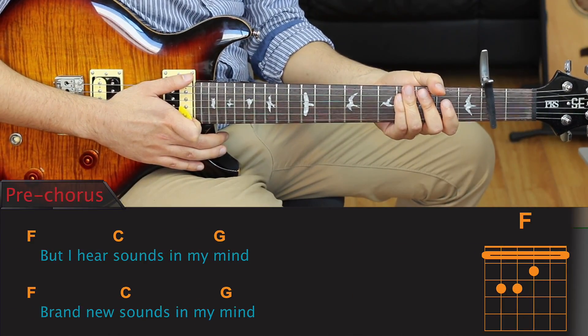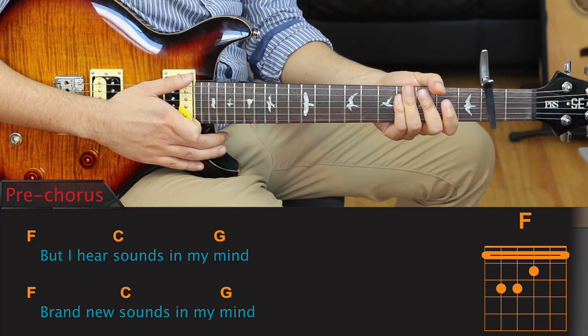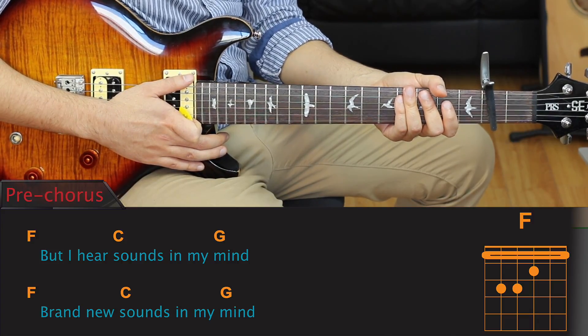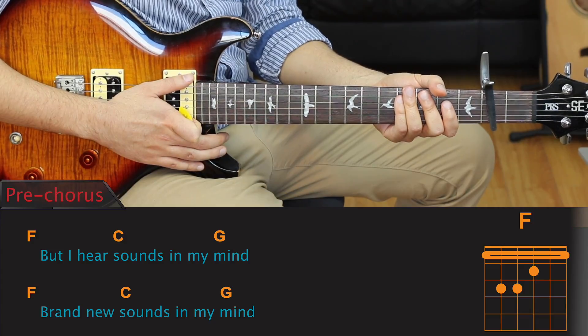The good news is that the pre-chorus, the chorus, and the outro use all the same chords and strumming patterns, which means that once we've learnt this section, we'll basically know how to play the entire song.